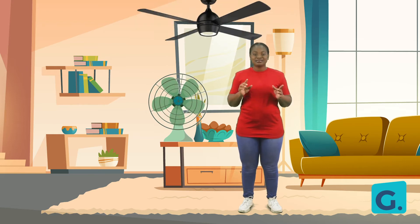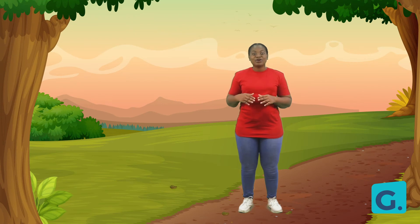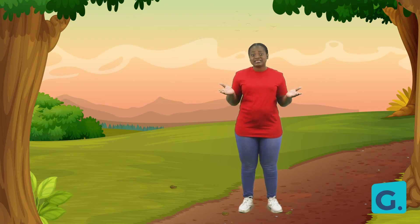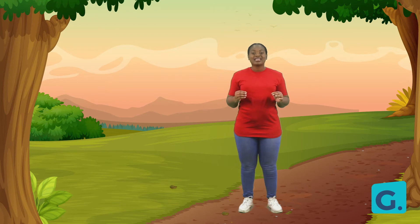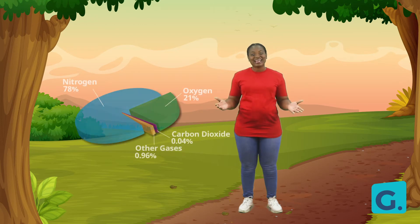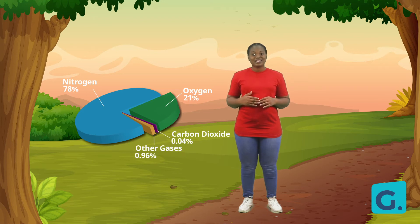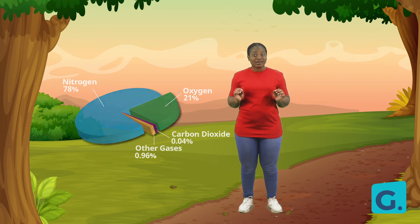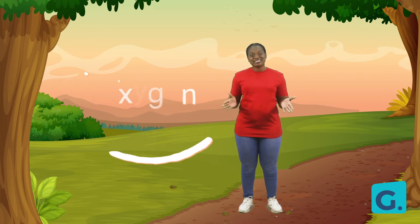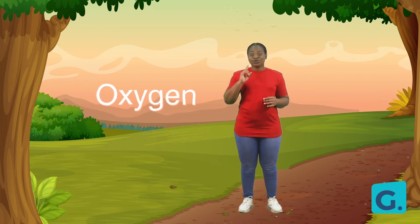You see, my friend, air can be found all around us. Even though we can't see it or taste it, we can feel it for sure. Air is a mixture of gases and dust particles too. An example of a gas found in the air around us is oxygen, which is what you breathe in — and what I breathe in.